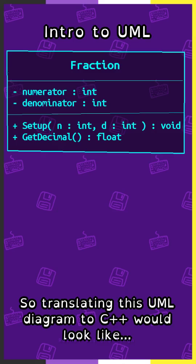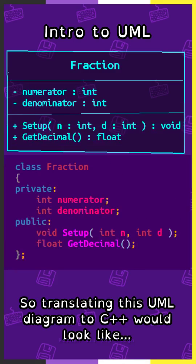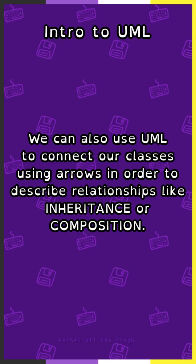So translating this UML diagram to C++ would look like this. We can also use UML to connect our classes using arrows in order to describe relationships like inheritance or composition.